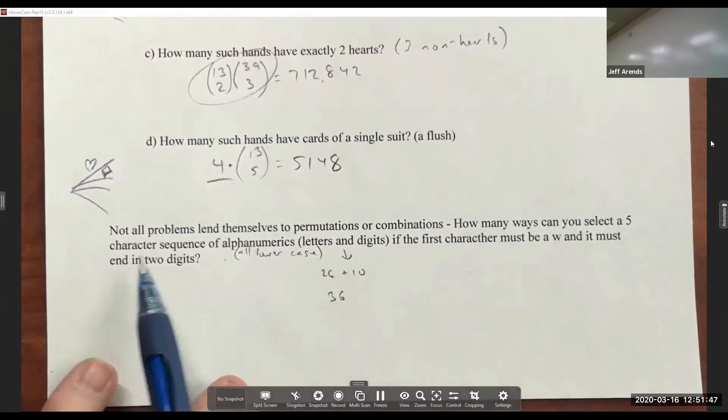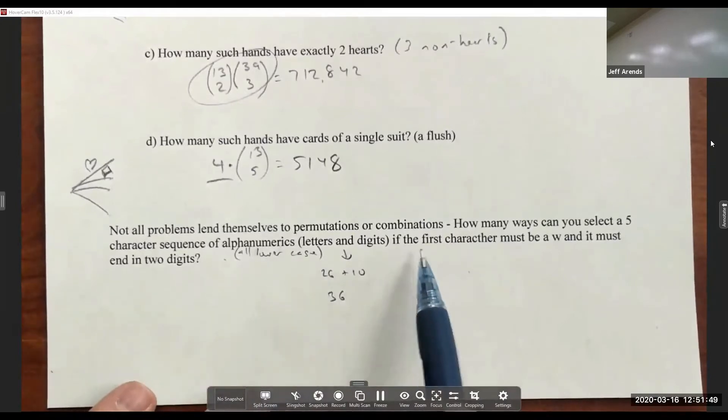In how many different ways can you select a sequence of alphanumerics if the first character must be a W and it must end in two digits?